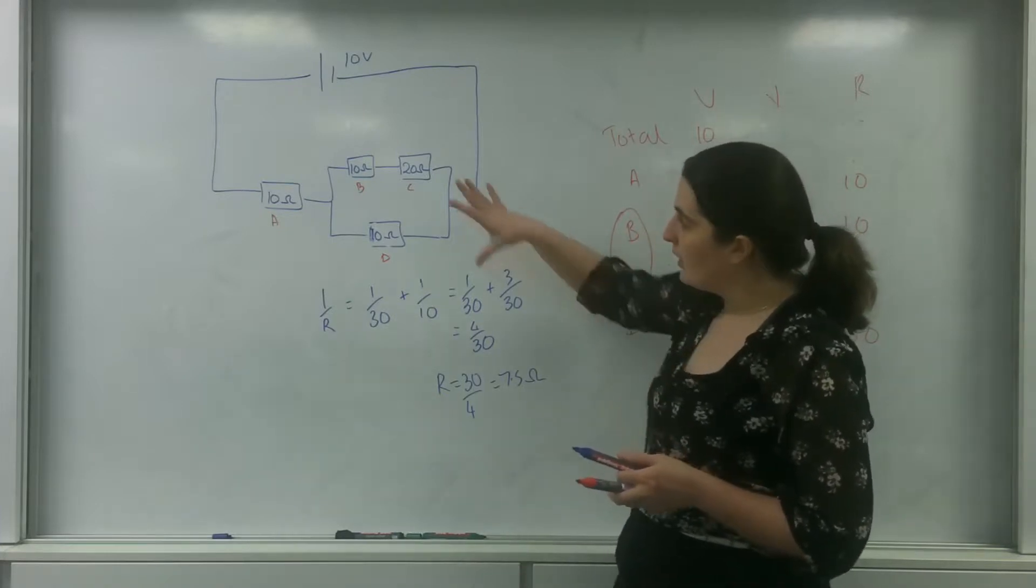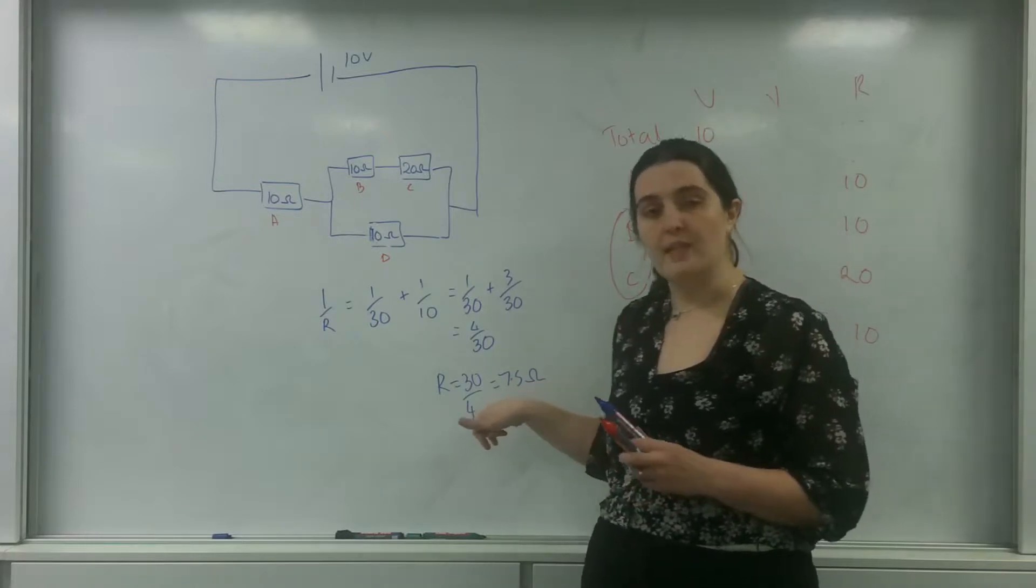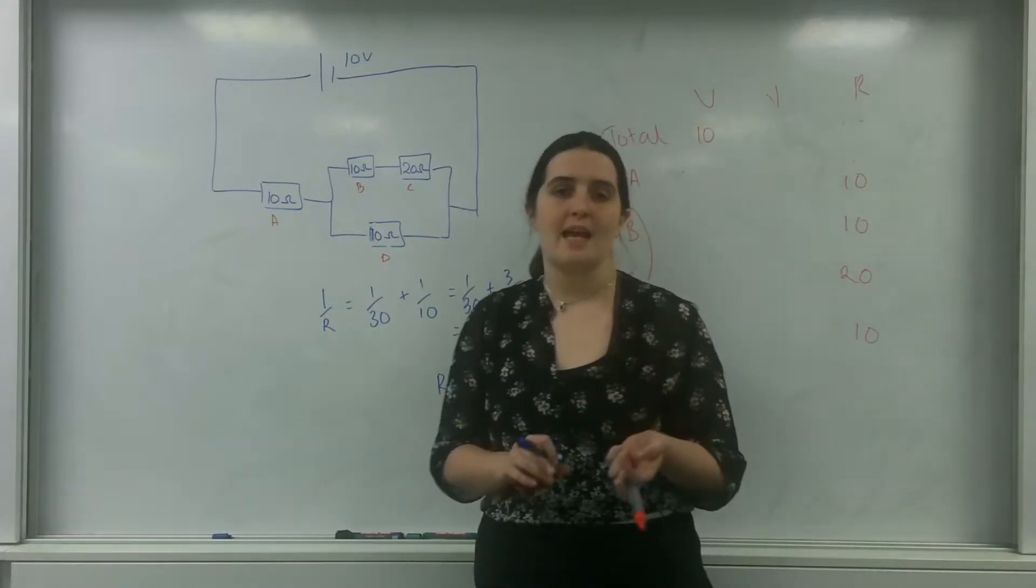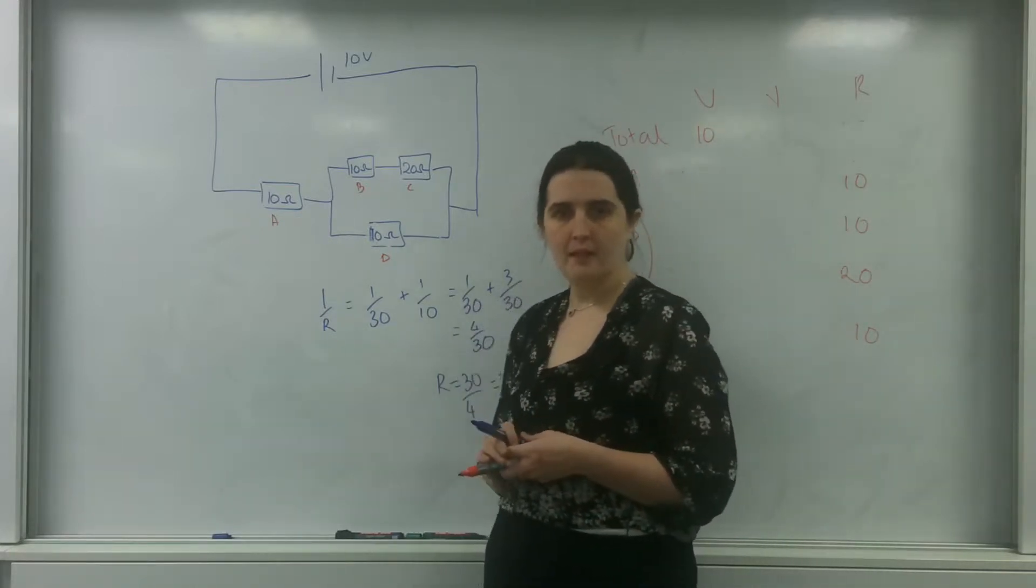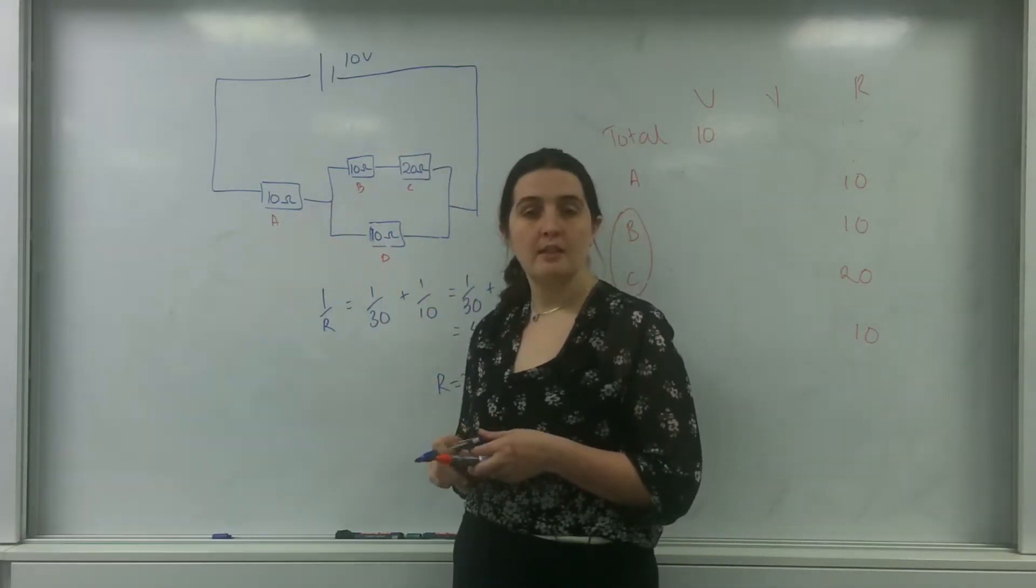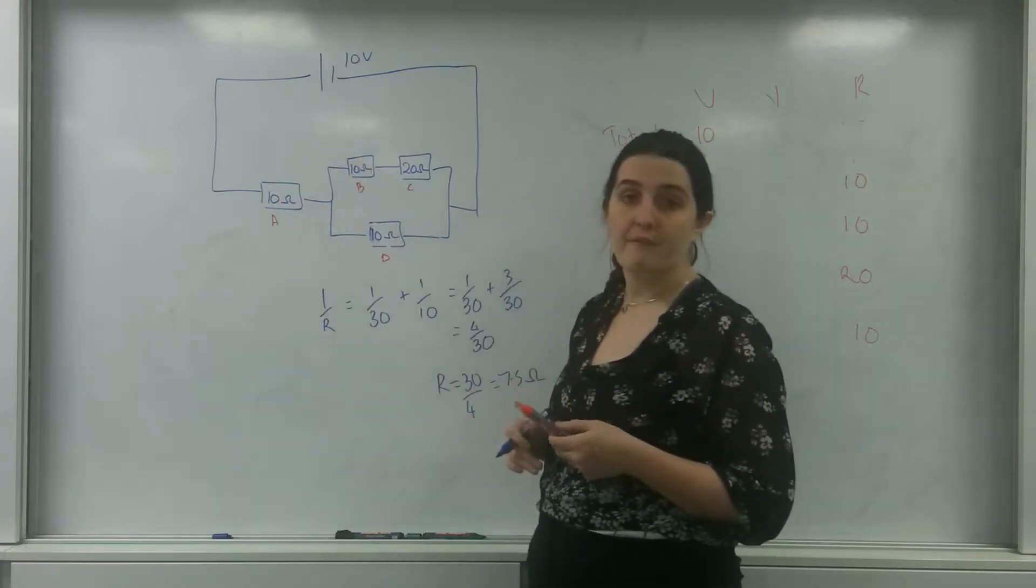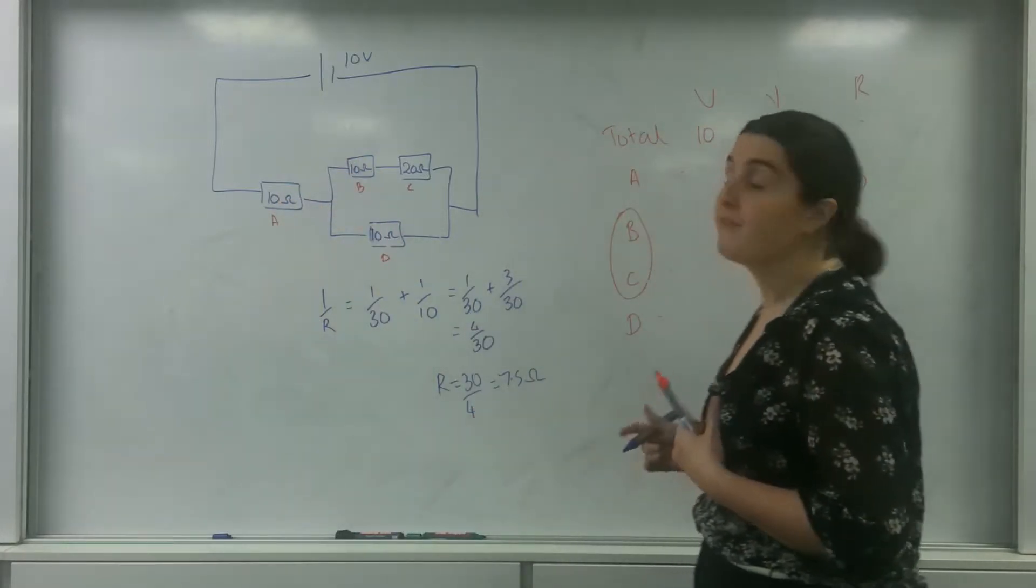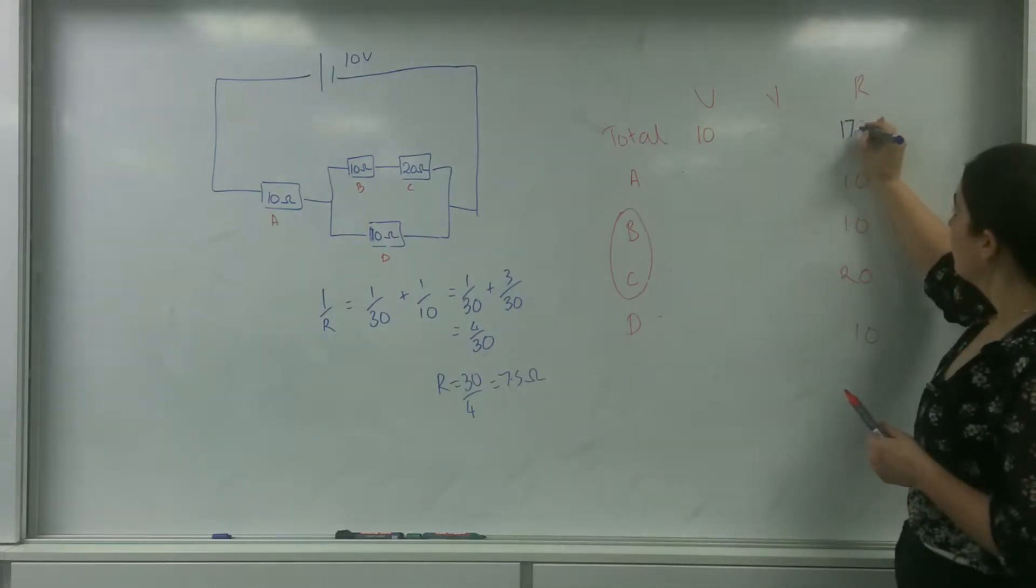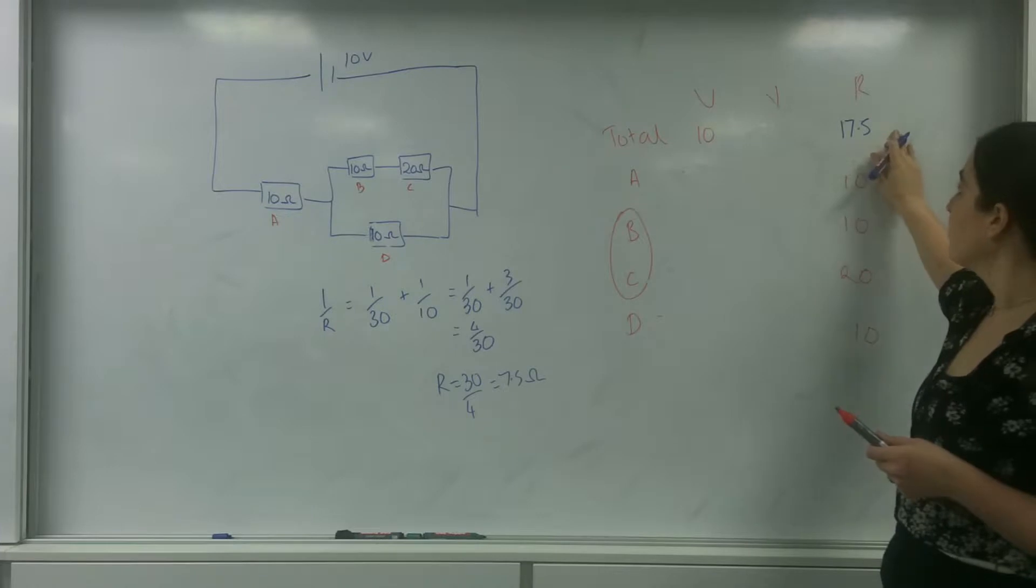This means that I could replace this whole complicated network with one resistor of 7.5 ohms and I'll have the same effect. Now this 7.5 ohms is in series with this 10 ohm resistor. This means in total, 10 plus 7.5 is 17.5. So I know my total resistance is 17.5.